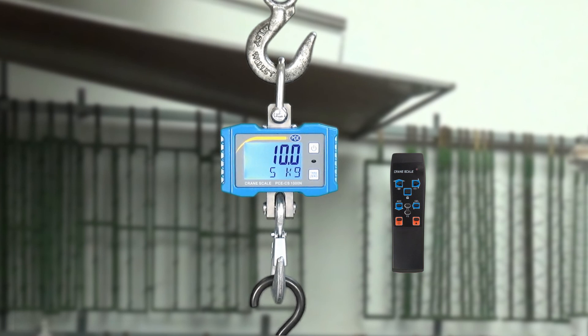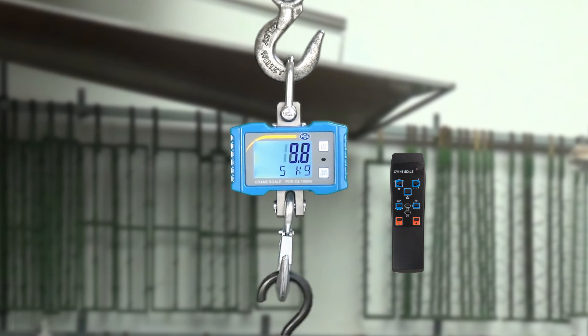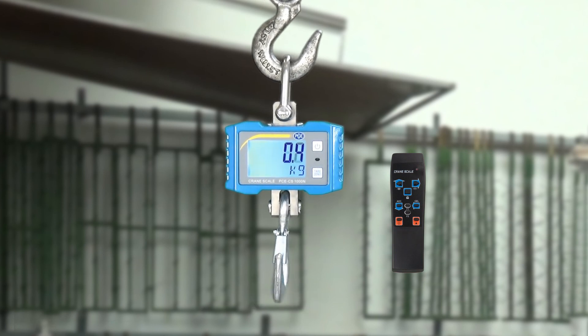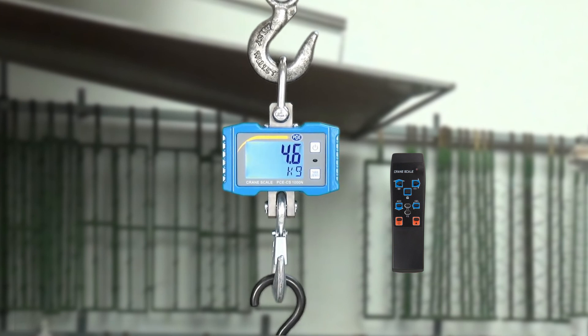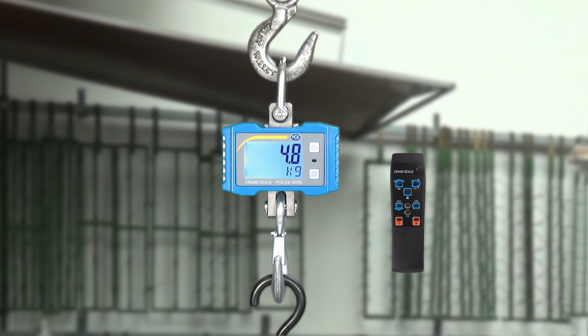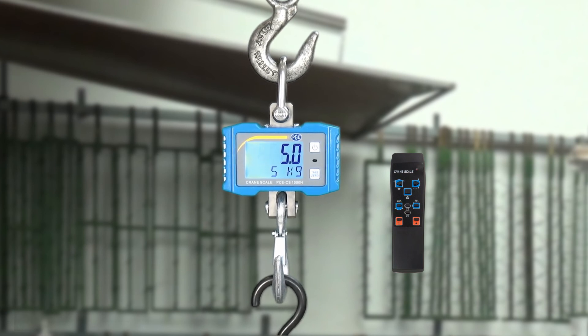And for example, a further load add to it. In this case I put another 5 kilogram onto the crane scale. Press here again the ACC key, and can now in the display read the 20 kilo.